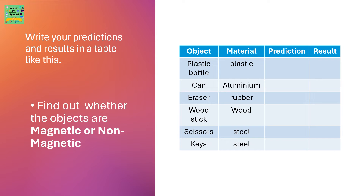Write your predictions and results in a table with columns for object, material, prediction, and result. Find out whether the objects are magnetic or non-magnetic. The objects given are: plastic bottle, can, eraser, wood stick, scissors, and keys.